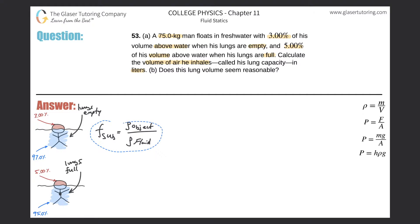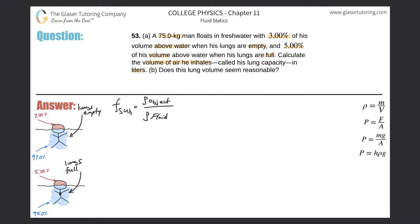Breaking this formula down into specifics: the fraction submerged of the man with his lungs empty equals the density of the man's body when his lungs are empty — subscript E — divided by the density of the water. He's in fresh water. Similarly, the fraction submerged when his lungs are full equals the density of the man's body when his lungs are full, divided by the density of the water.